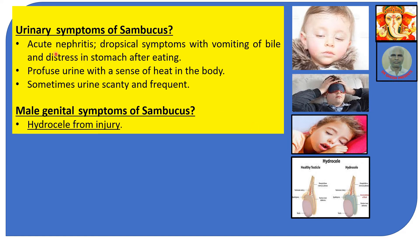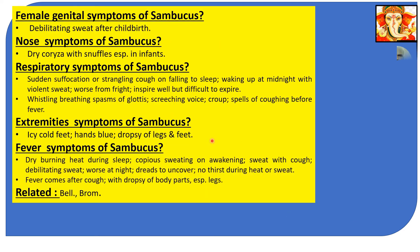Urinary symptoms: acute nephritis. Dropsical symptoms with vomiting of bile and distress in stomach after eating. Profuse urine with a sense of heat in the body. Sometimes urine is scanty and frequent. Male genital symptoms: hydrocele from injury — this is where water accumulates within the covering of the testicle. Female genital symptoms: debilitating sweat after childbirth.